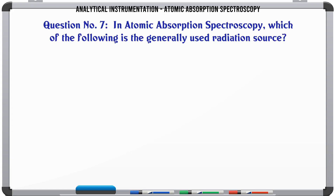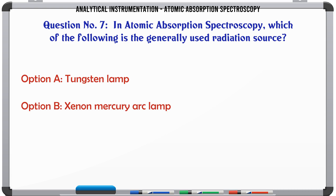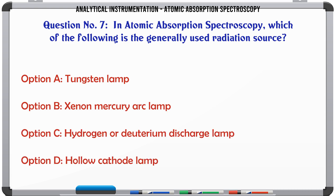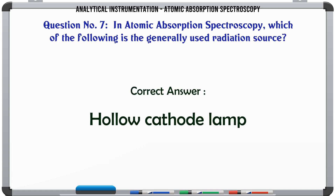In atomic absorption spectroscopy, which of the following is the generally used radiation source? A. Tungsten lamp. B. Xenon mercury arc lamp. C. Hydrogen or deuterium discharge lamp. D. Hollow cathode lamp. The correct answer is hollow cathode lamp.